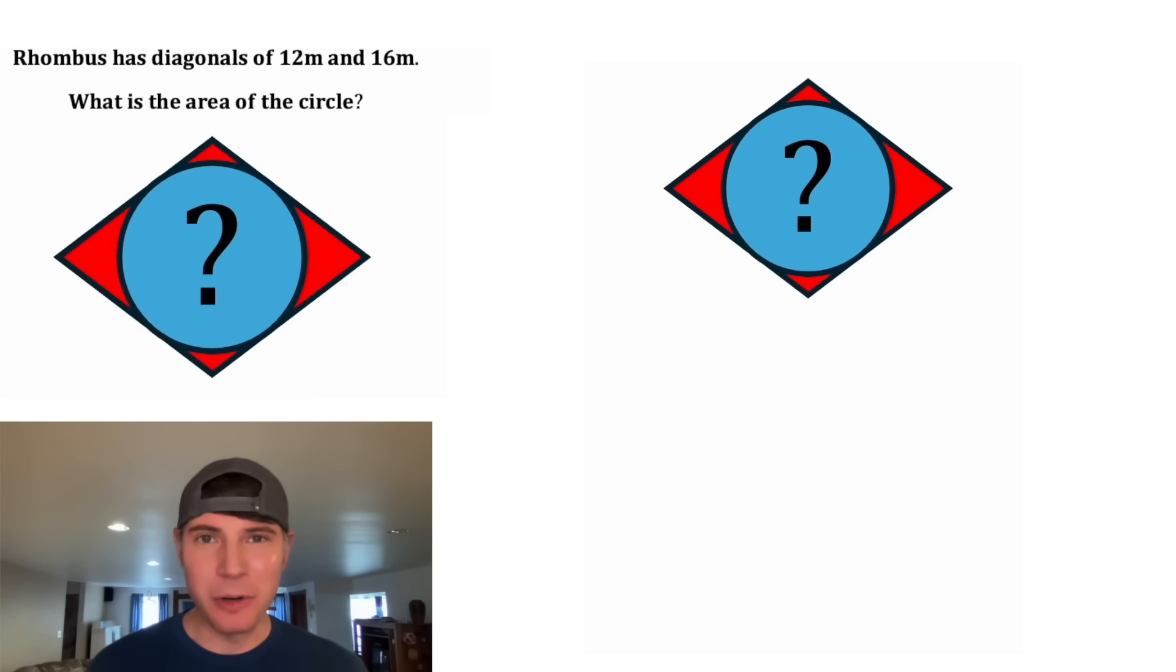Hey guys, this looks like a fun one. It was sent to me by one of my patrons. It's got a circle inscribed in a rhombus. That means all four of these lines are tangent lines. They all touch the circle in exactly one point, and that's called the tangent point. And the rhombus has diagonals 12 and 16. And it wants to know what is the area of the circle.